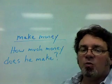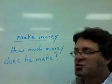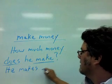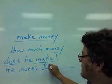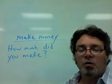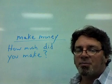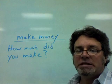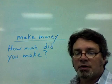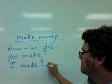When talking about a salary, we often use 'make' with money. For example: how much money does he make? The answer is: he makes, followed by the amount — he makes $50,000 a year. It's not always necessary to use the word 'money' with 'make'. In the past tense: how much did you make? The answer would be: I made, followed by the dollar amount.